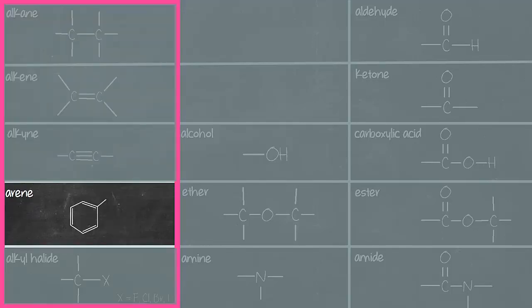Next we have arine, which is also called an aromatic group. At introductory chemistry level, the arine you will encounter will be benzene ring, which consists of six carbons with alternating single and double bonds.